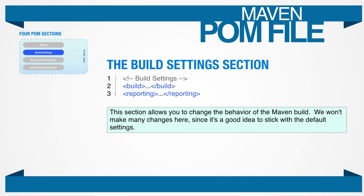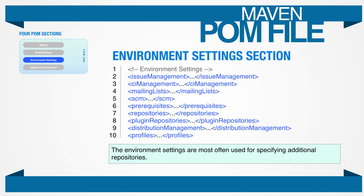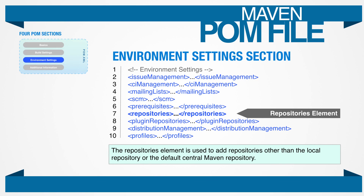We won't update the build section much because we're going to rely on the defaults. The environment settings describe things like repositories to get dependencies for your build, continuous integration for the project, mailing list, and other general project information. We'll need to specify repositories to retrieve specific dependencies, but won't use much else. When we need a dependency that isn't in the default central Maven repository, we will need to provide other repositories to search — this can be a third-party private repository or your company's private repository. This additional repository is added in the environment section under the repositories section.